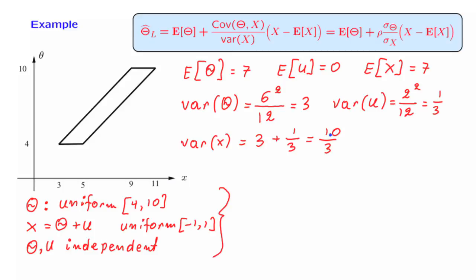Now, let us try to calculate the covariance term. The covariance of theta with x is this expression, because x is theta plus u. And then using linearity properties of covariances, this is the covariance of theta with itself, plus the covariance of theta with u. Now, theta and u are independent, so this covariance is equal to 0. The covariance of theta with itself is just the same as the variance, so here we obtain an answer of 3.